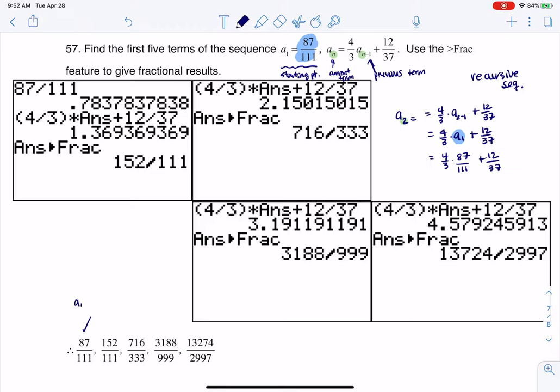Yeah, ugly number, not denying that, but you see me working that right here, right. So I put in my starting value of 87 over 111, and then I did 4 thirds times the previous number plus 12 over 37. I got this decimal, and I used that Frac button to get me my second value, and that was 152 over 111.